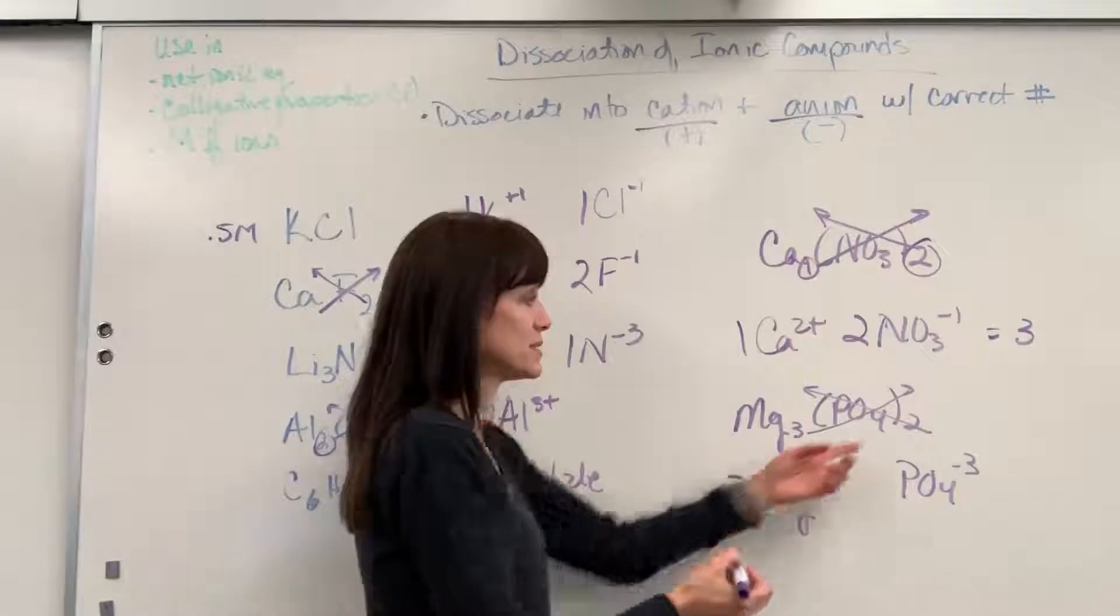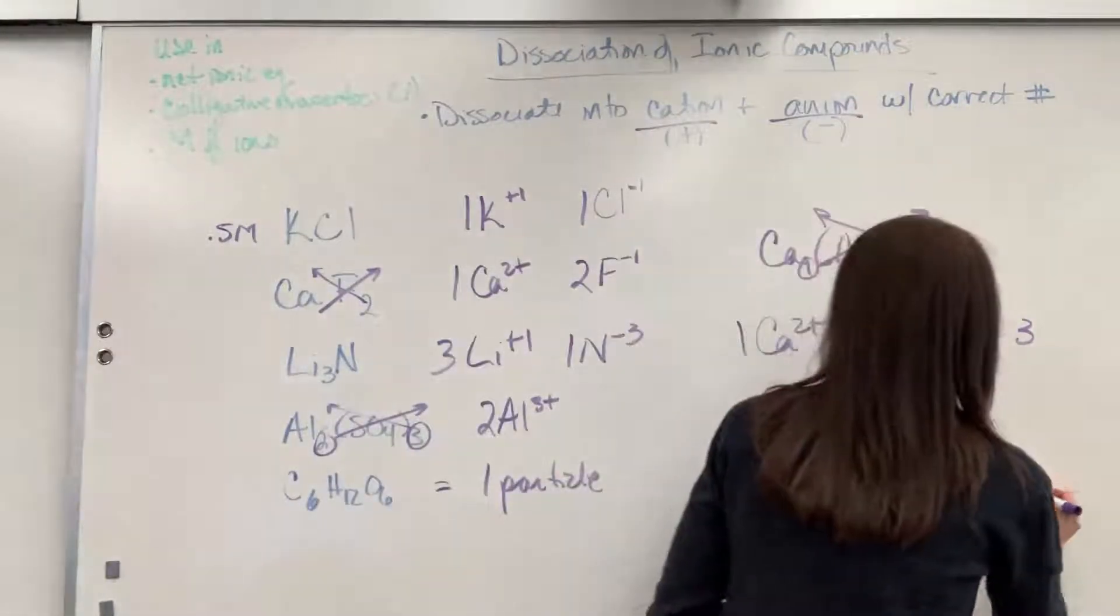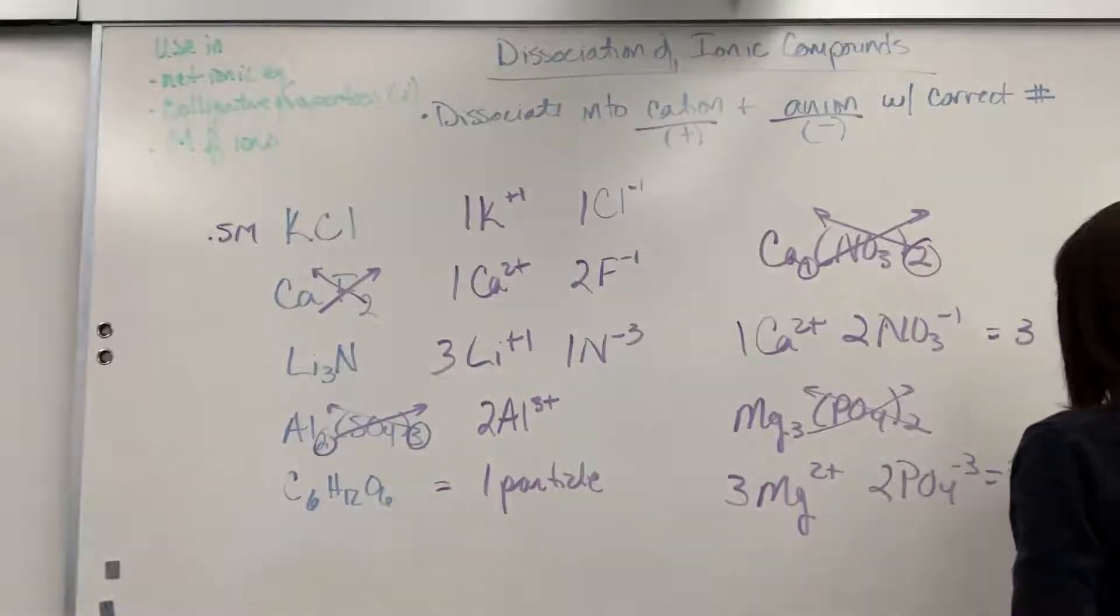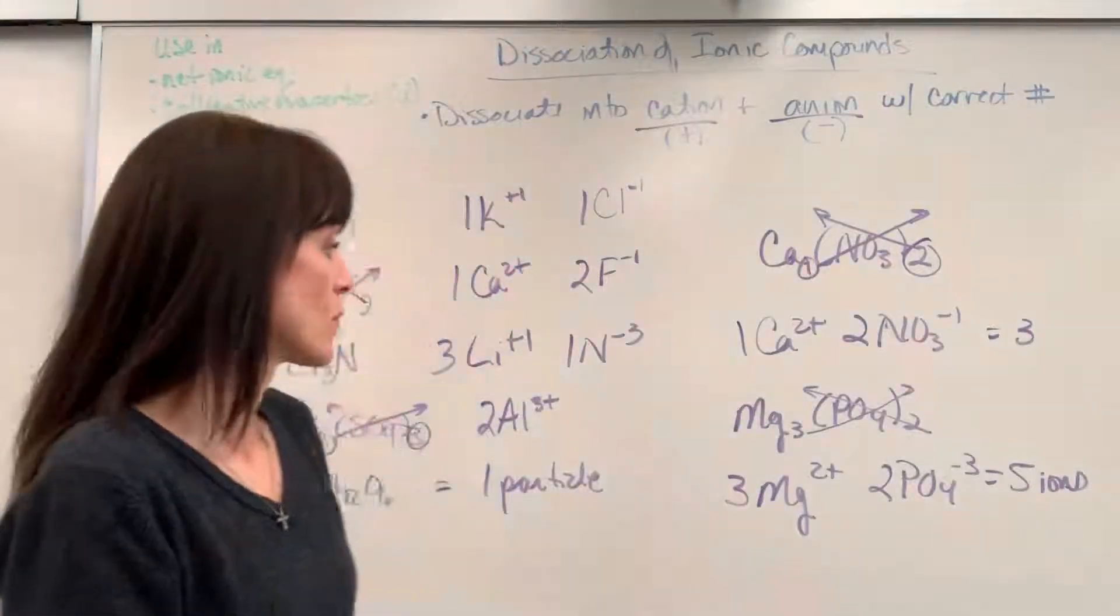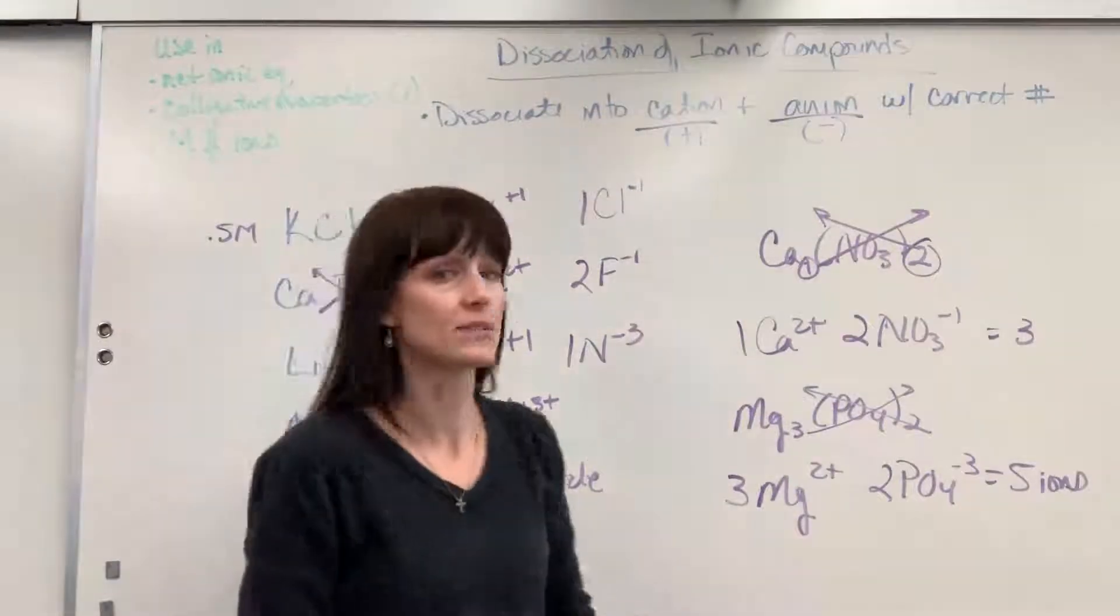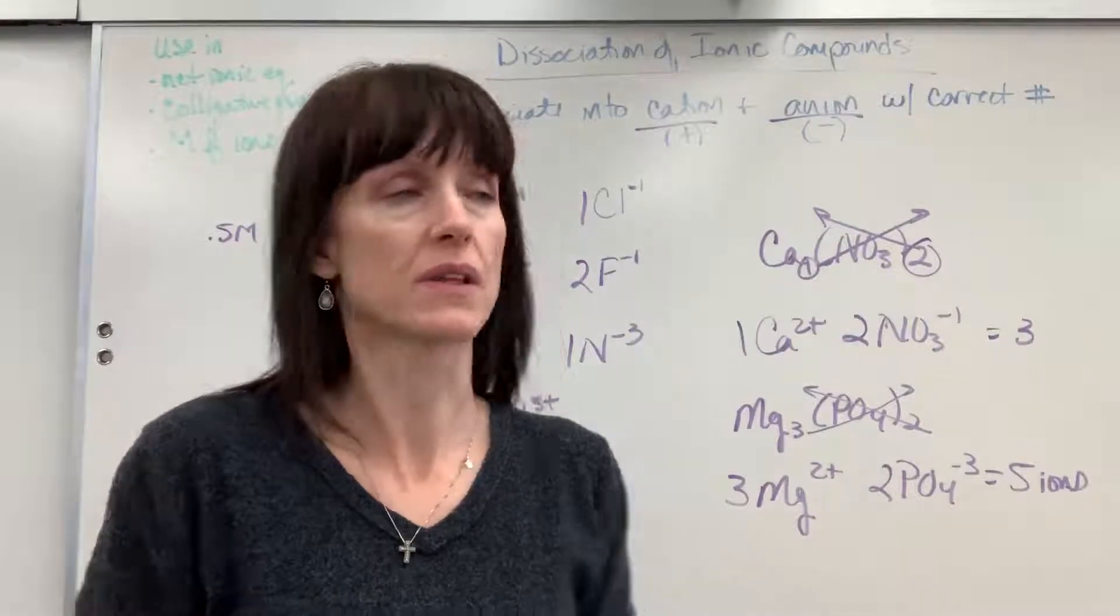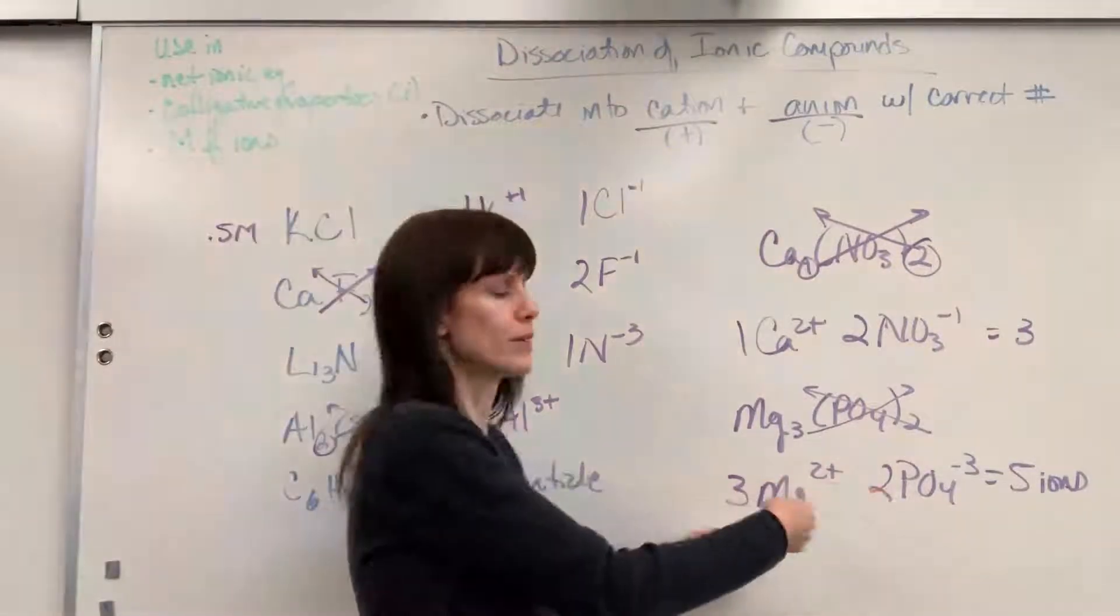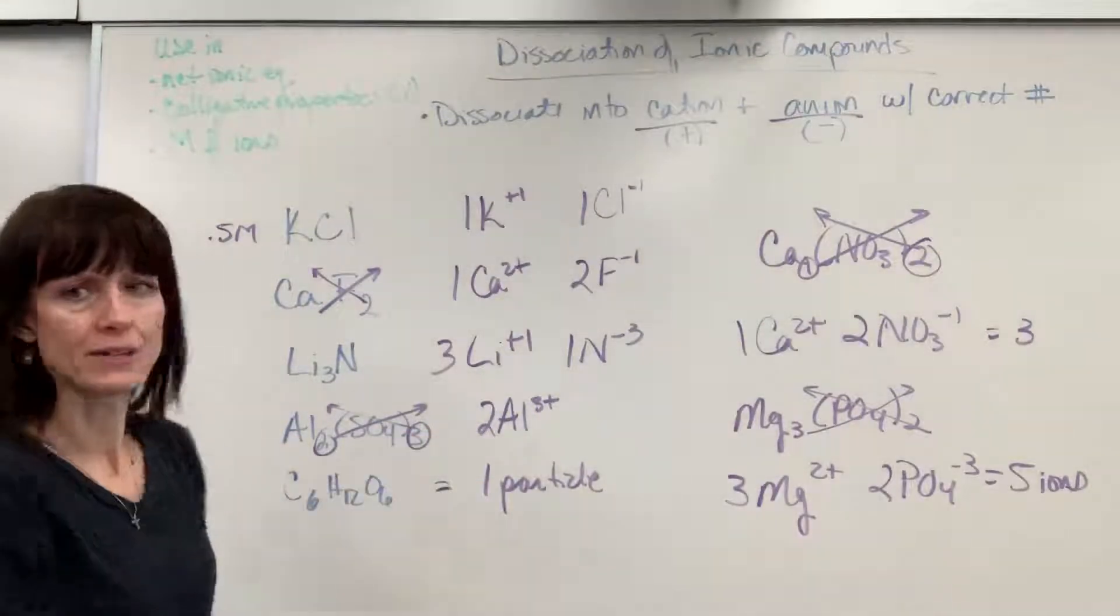And now how many do we have of each? I've got three magnesiums and two phosphates. Very cool. Five ions. We've got a total of five ions. So thinking colligative properties, the more ions we have, the more particles we have, the greater the power, the influence of the colligative property. That would be a great one. Five ions. And here, this one also had five ions. That would be awesome.